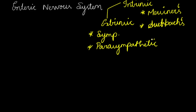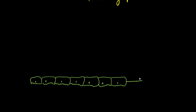Now let's see how these Intrinsic and Extrinsic Nervous Systems have their exclusive action over the GI tract. The innermost layer is none other than the mucosa, and this mucosal layer, as we have already discussed, has three linings: one is the epithelial lining, then the lamina propria, and the third is the muscularis mucosa.